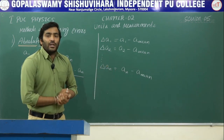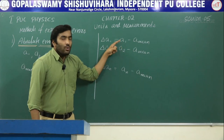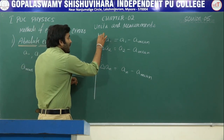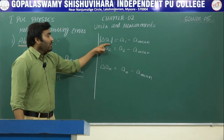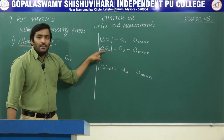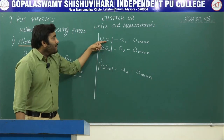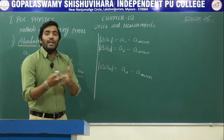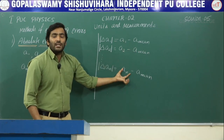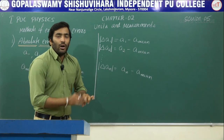If you find any negative values in A1 minus A mean or A2 minus A mean, you should consider them as positive. That is the meaning of the modulus symbol. Now let us give a proper definition for absolute error. It is the magnitude of the difference between the measured value and the true value.